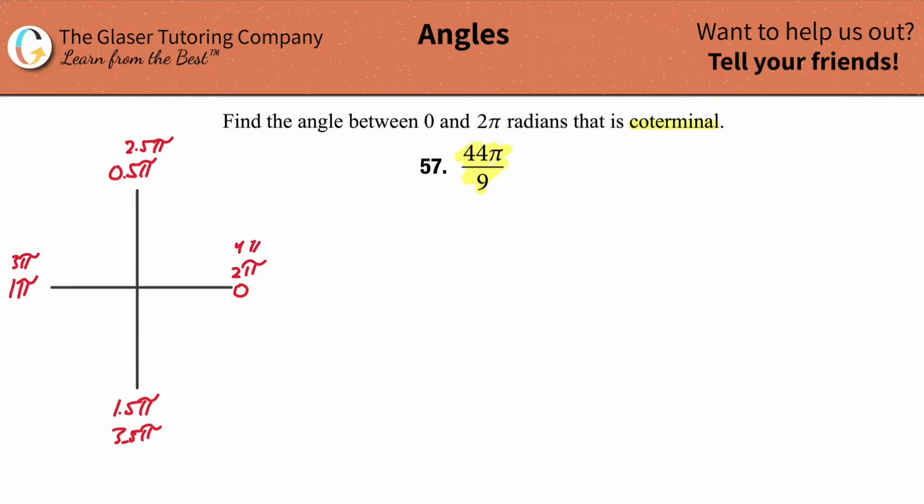If you kept going, this would be 4 pi. If you kept going, then this would be 4 and a half pi. If you kept going, this would be 5 pi. If you kept going, this would be 5 and a half pi, etc.